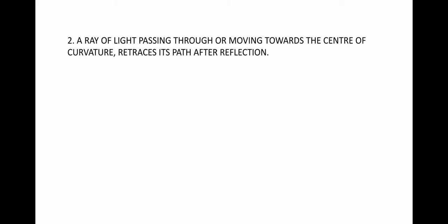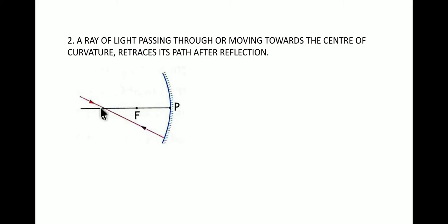Rule number two: a ray of light passing through or moving towards the center of curvature retraces its path after reflection. In the figure, there's a concave mirror and the red incident ray is passing through the center of curvature C and is incident at the mirror. When the ray passes through the center of curvature it will retrace its path after reflection — it will strike the surface, reflect, and bounce back along the same path it came from.